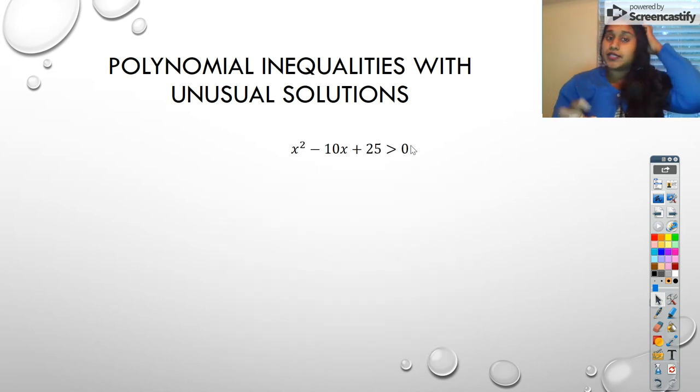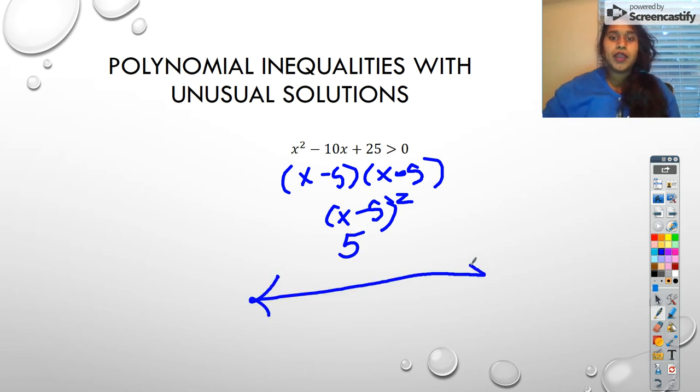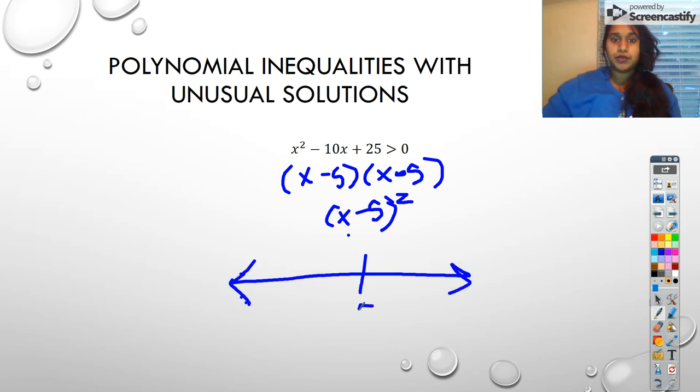Our third example here is x squared minus 10x plus 25 is greater than zero. This is factorable. In fact, I could write out that factor for you because factors of 25 that get me to 5 would simply be x minus 5 times x minus 5. That's a multiplicity, right? That's a multiplicity that tells me that's actually x minus 5 squared. I have two of them. So how many rational zeros did I just solve for? One. Up until this point, you have had at least two values. So what would that sign chart look like? I would have one value. That's it.